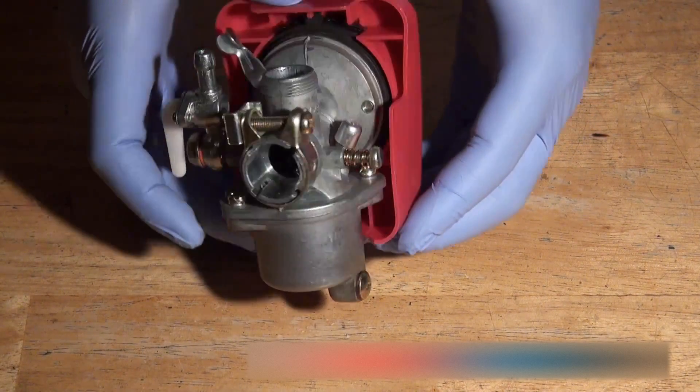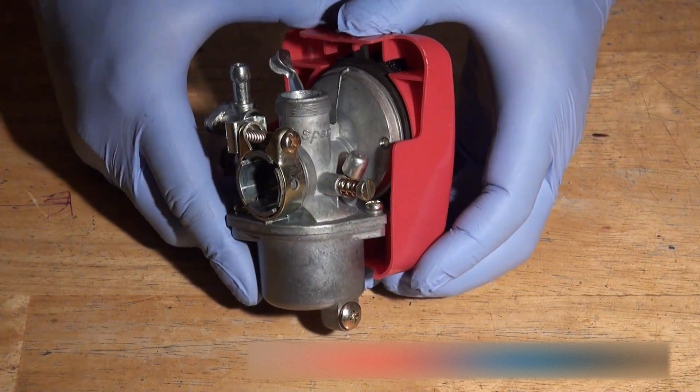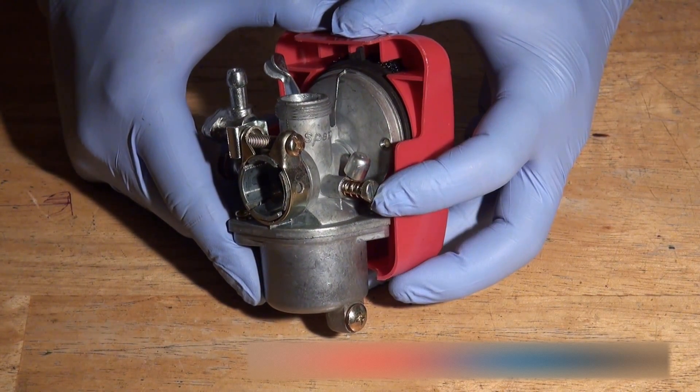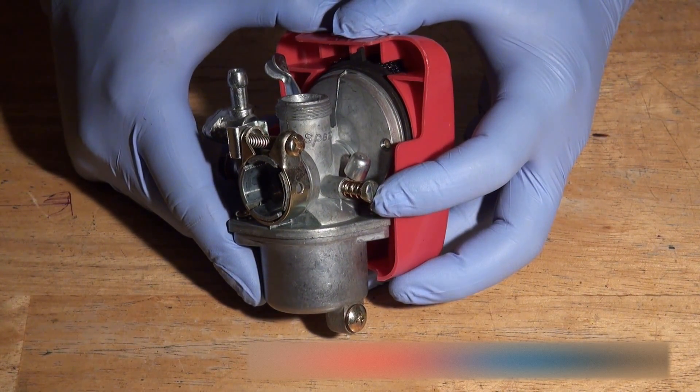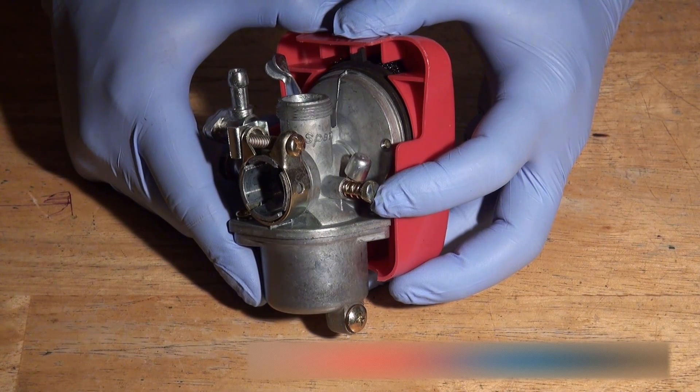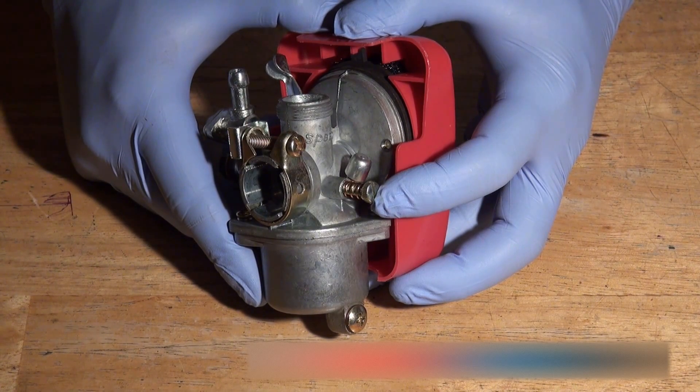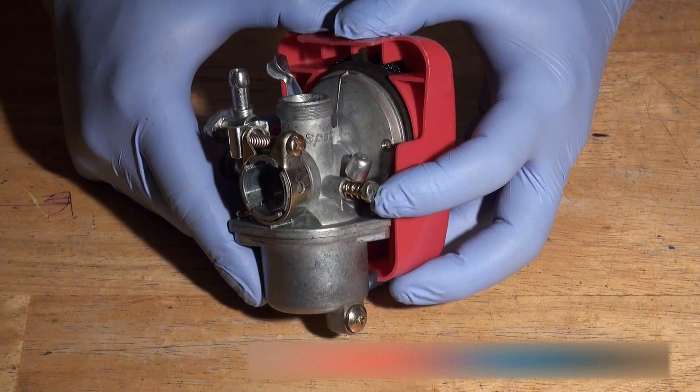Now, if you turn the carburetor around on the other side, you can see here there is an idle adjustment screw. What this screw does is adjusts the idling speed of your engine.